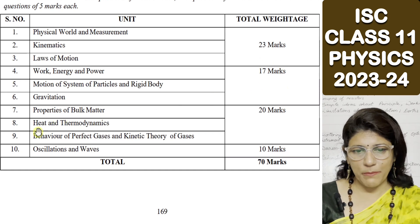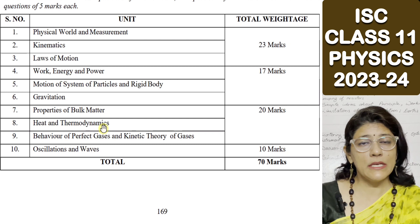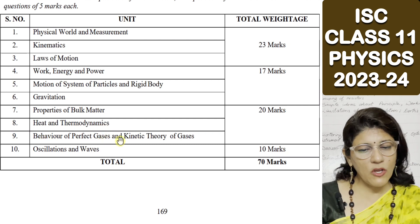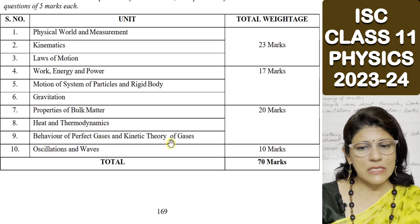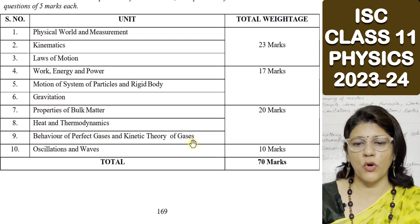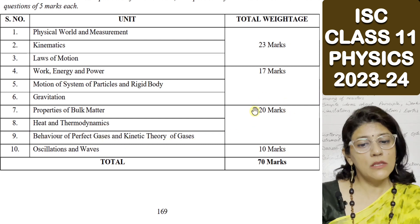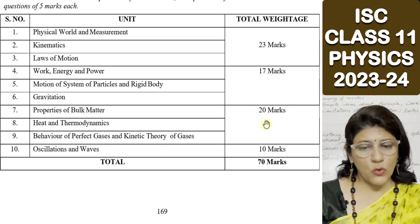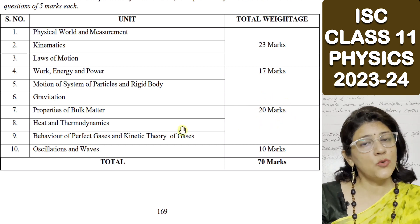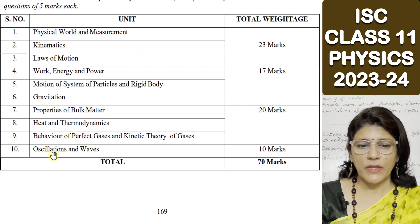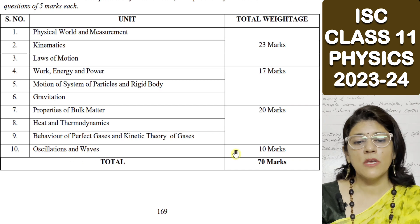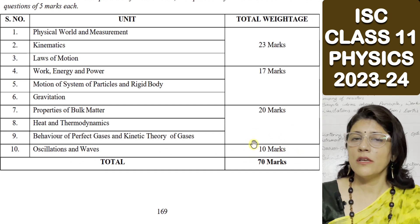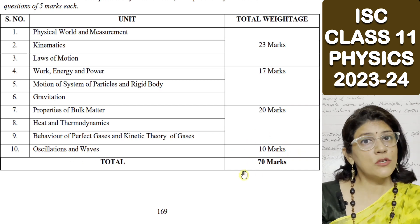Properties of Bulk Matter, Heat and Thermodynamics, and Behaviour of Perfect Gases and Kinetic Theory of Gases — these three units together carry 20 marks. Next is Oscillations and Waves; this single unit carries 10 marks.